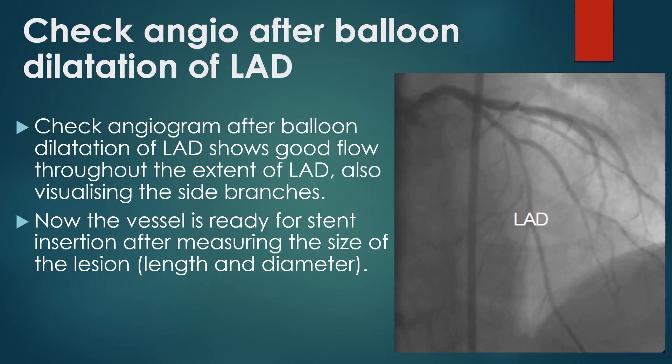If the lesion is not fully expanded after initial balloon dilatation, serial dilatation with different sizes of balloon may be used, with due precautions to avoid vessel injury like dissection and perforation. In some cases, if the lesion is calcified, rotablation using the diamond burr of a rotablator may be needed for preparing the stenting.